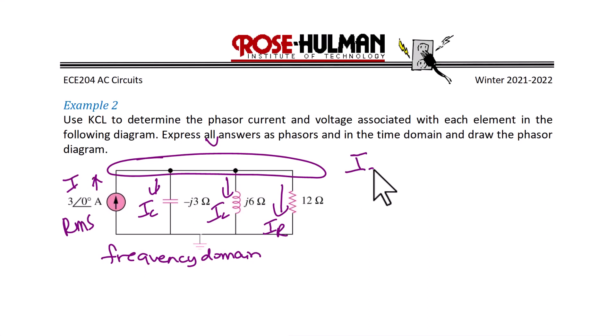So the source current IS is equal to IC plus IL plus IR, and that's our KCL equation. So we can write that as 3 equals V over negative J3 plus V over J6 plus V over 12. And when we solve for the voltage,